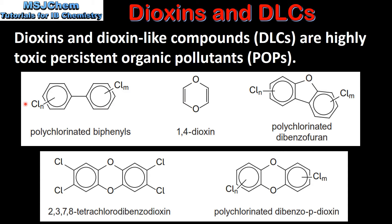On the left we have the general formula of a polychlorinated biphenyl or PCB. Here we have the structure of 1,4-dioxin. And on the right we have the general formula for a polychlorinated dibenzofuran or PCDF. Bottom right we have the general formula for a polychlorinated dibenzodioxin or PCDD. And finally on the left we have a specific example of a PCDD which is 2378-tetrachlorodibenzodioxin. Next we look at each of the structures in more detail.